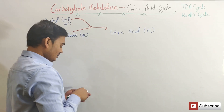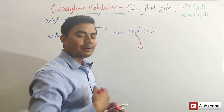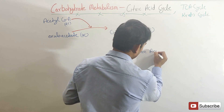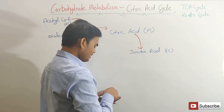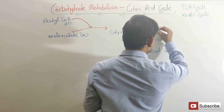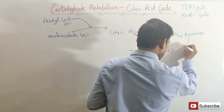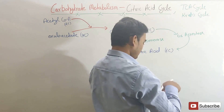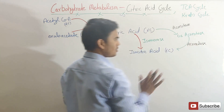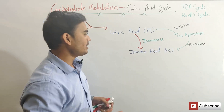This citric acid will isomerize and form isocitric acid. Isocitric acid is also a six-carbon compound, so only isomerization takes place — enzyme isomerase. Note that some books demonstrate citric acid is first converted into cis-aconitate, and then cis-aconitate is converted into isocitric acid. In both cases, enzyme aconitase is used. Cis-aconitate is an unstable intermediate compound.